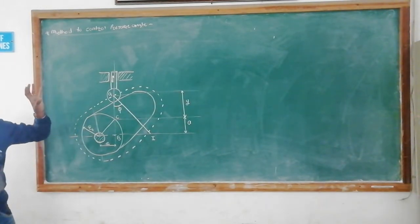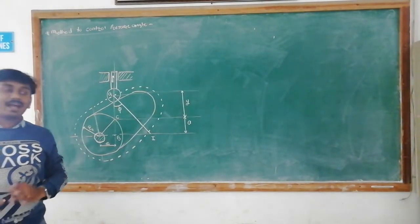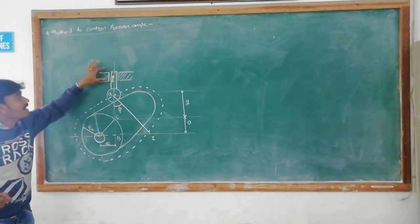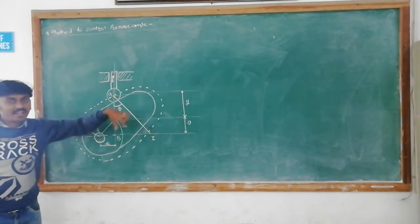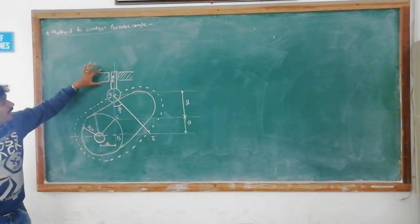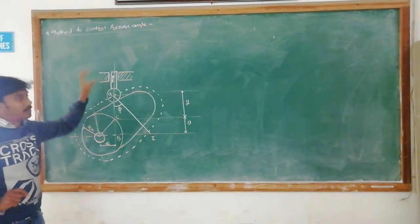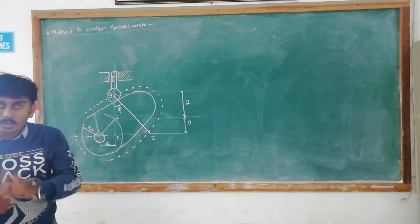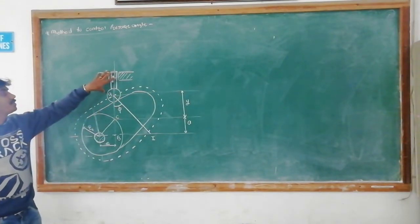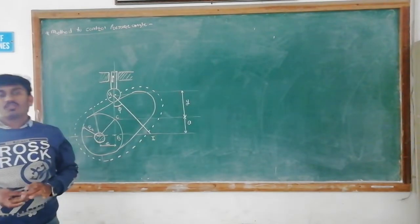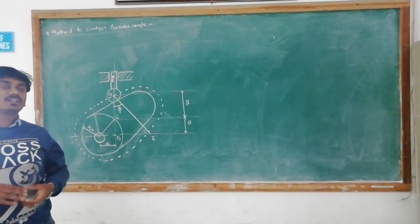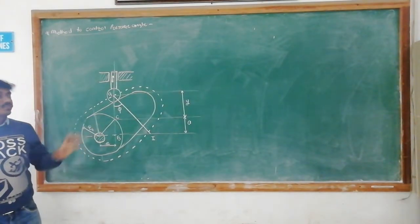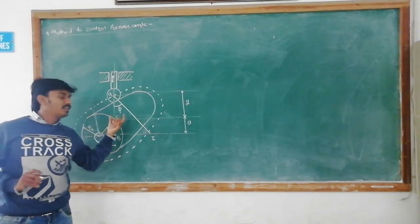So what is the need to control the pressure angle? As the pressure angle increases, the friction between the follower and the guideway increases, and due to this the follower will jump. So to avoid this, we have to keep the pressure angle φ as minimum.